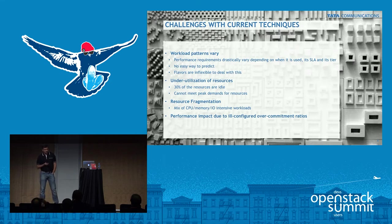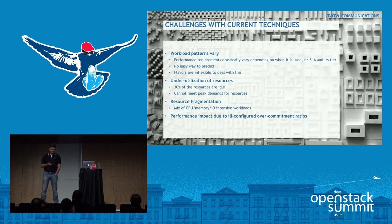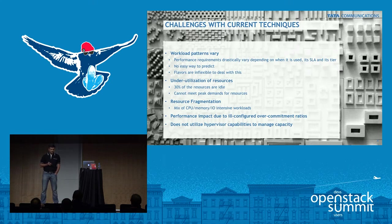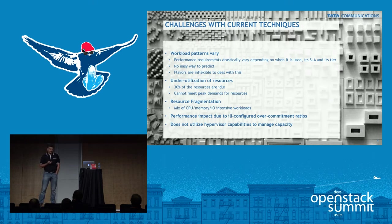There's performance impact due to ill-configured over-commitment ratios. Given the current strategies, we're going to see performance impact even when you increase the over-provisioning ratios to a high level, with no way to measure how it's impacting workloads. There are hypervisor capabilities — especially with KVM, ESX, and Hyper-V — that allow live migration and live resize in an automated manner, but those things are not available in OpenStack yet.